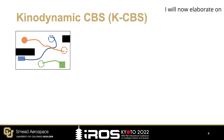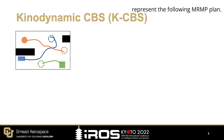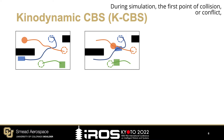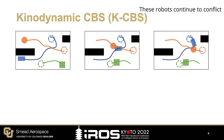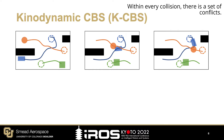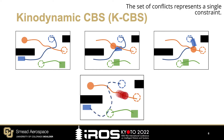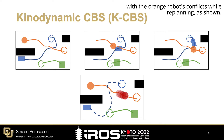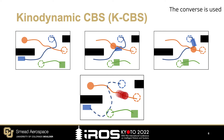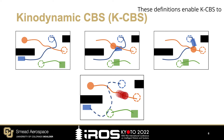I will now elaborate on how conflicts and constraints work. Let an arbitrary KCBS node represent a given MRMP plan. During simulation, the first point of collision, or conflict, is found between the orange and blue robots. These robots continue to conflict for some finite time interval. Within every collision, there is a set of conflicts. The set of conflicts represents a single constraint. For example, the blue robot must avoid colliding with the orange robot's conflicts while re-planning. The converse is used when re-planning for the orange robot. These definitions enable KCBS to efficiently solve MRMP problems.